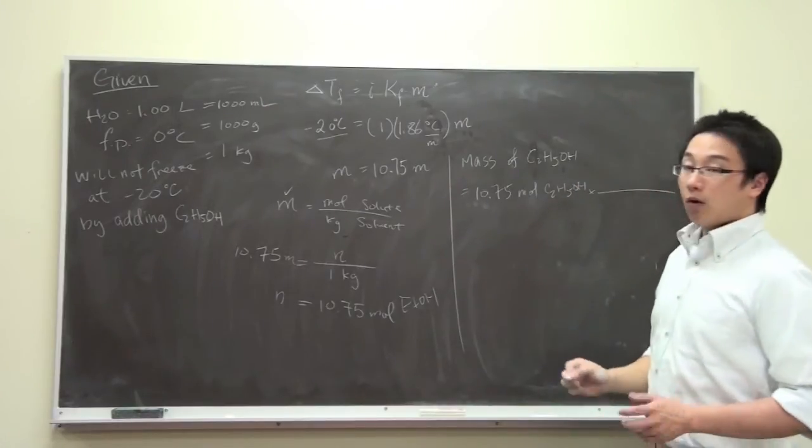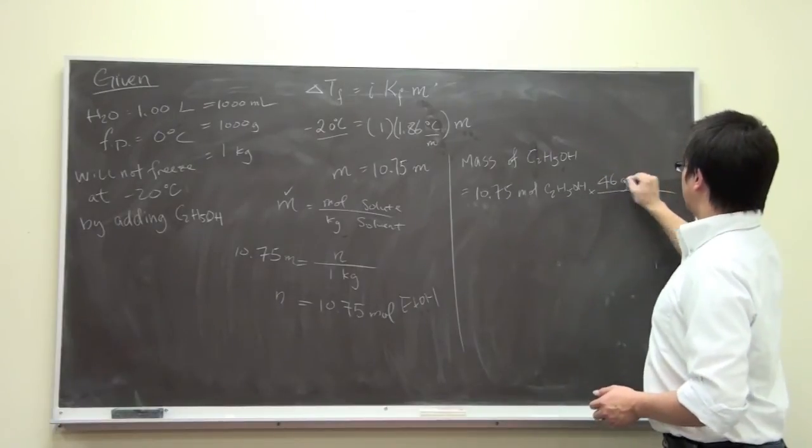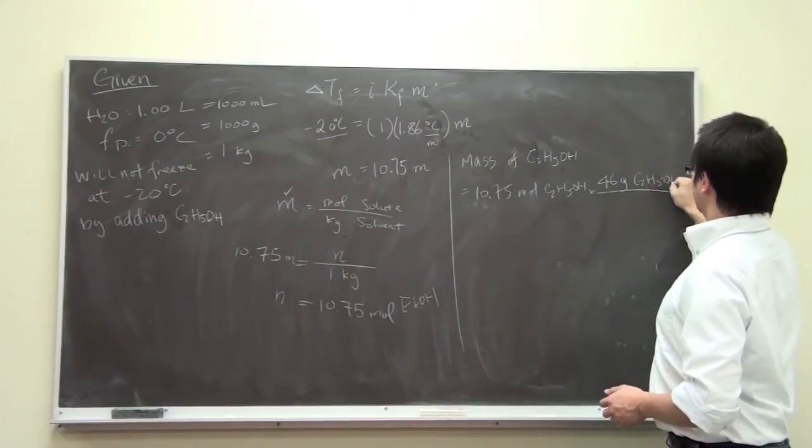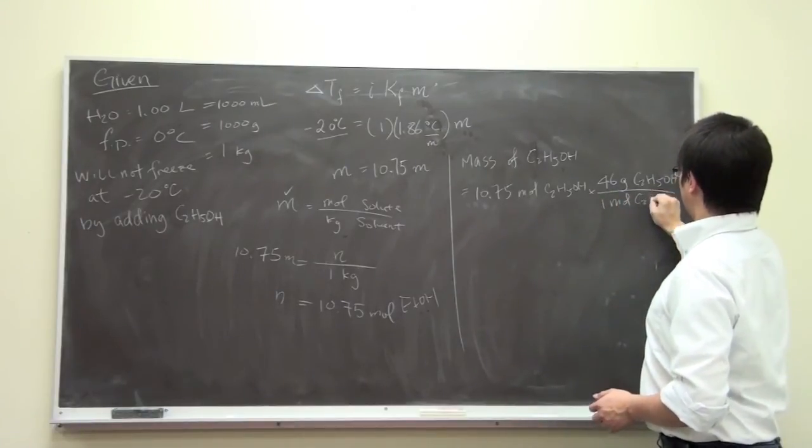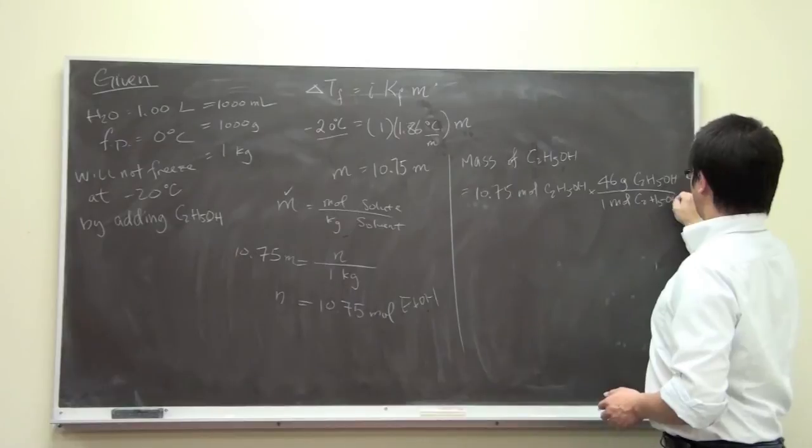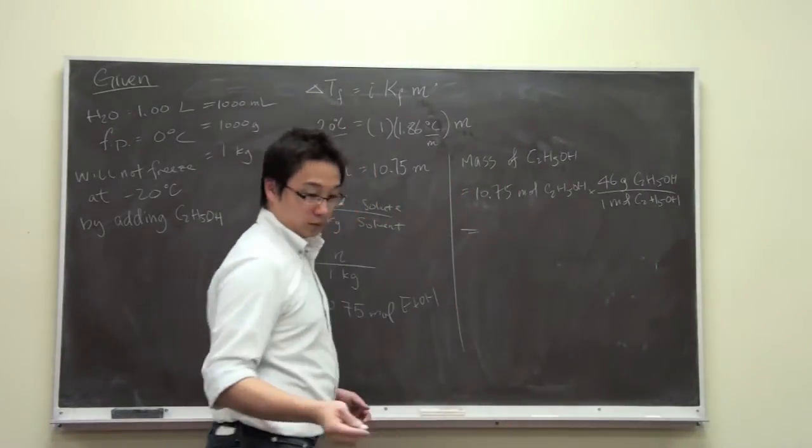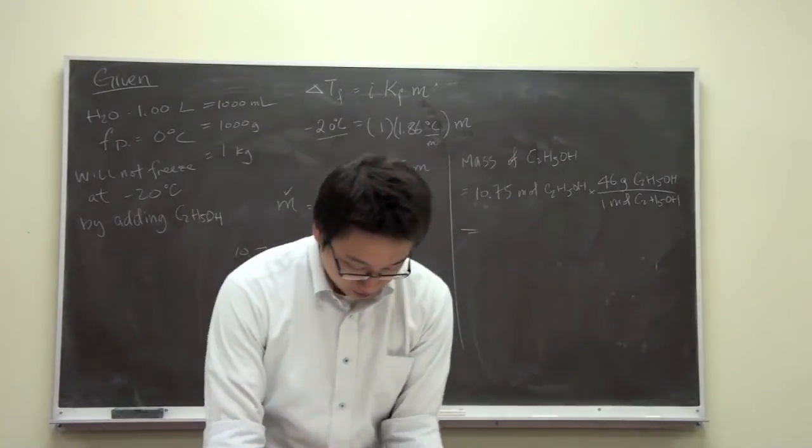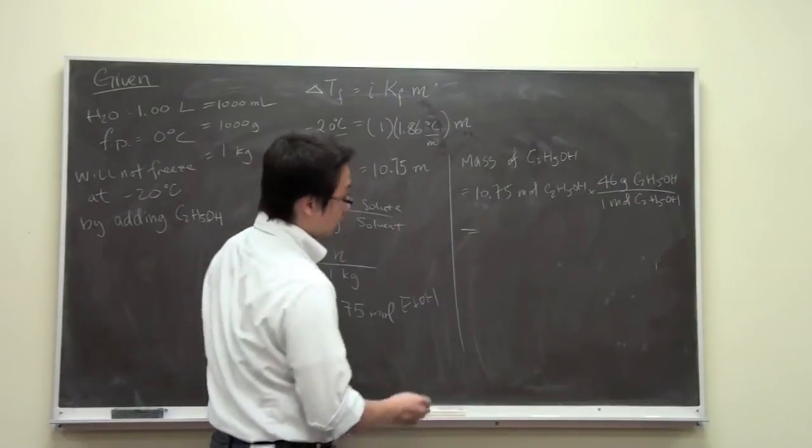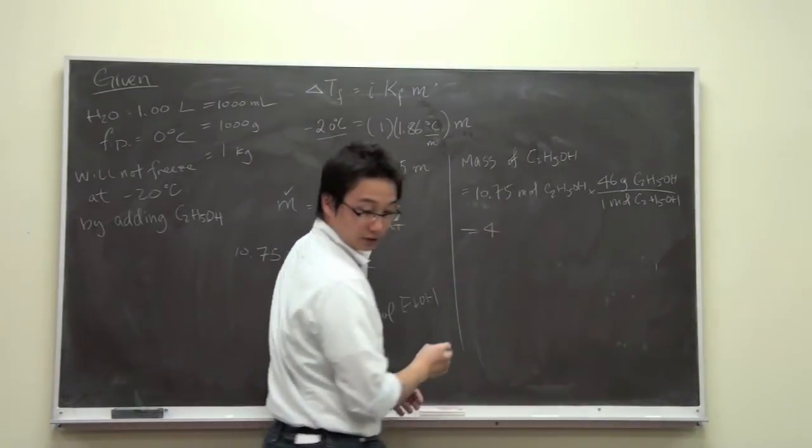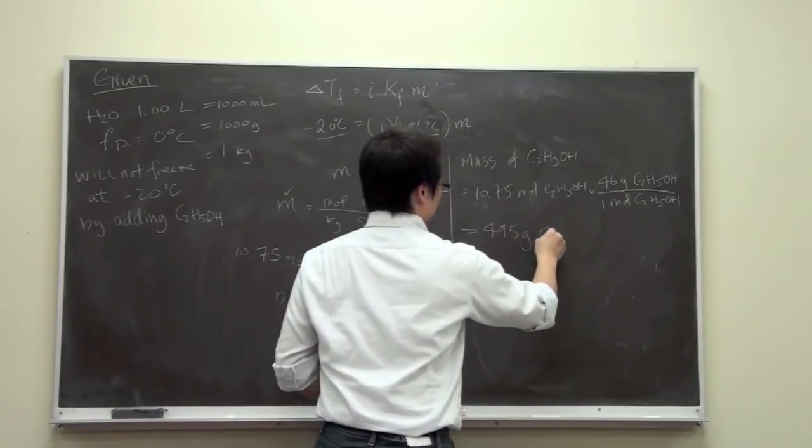And then the molar mass of ethanol is 46 grams per mole. So 46 grams of ethanol, one mole of ethanol. So we can simply use a calculator to calculate. So it turns out that we would need 495 grams of ethanol.